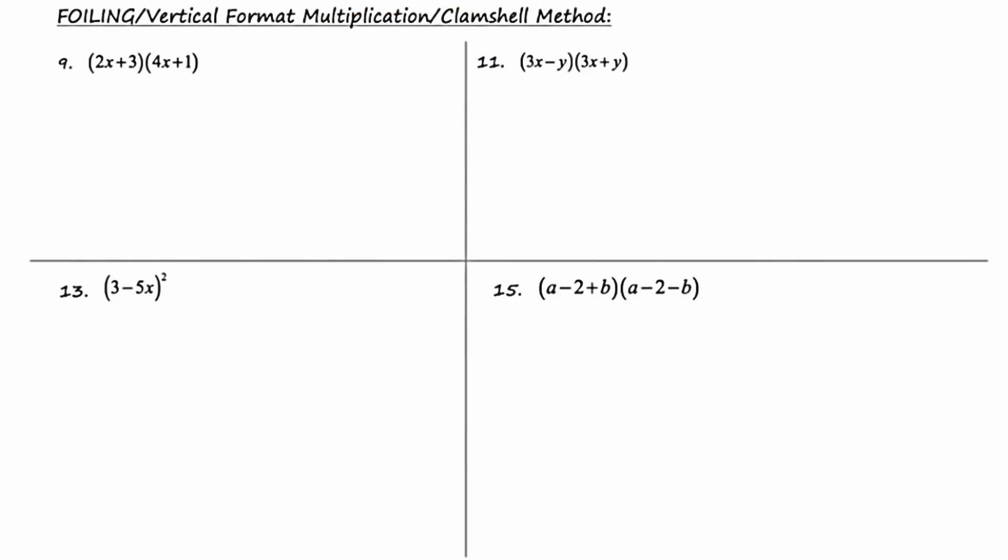Now on slide two, we previously did examples of the distributive property multiplying a monomial times a binomial or other polynomial. In example 9, we're multiplying two binomials together. The classic way to do this is a process called FOILing. FOIL is an acronym that stands for First, Outer, Inner, Last.